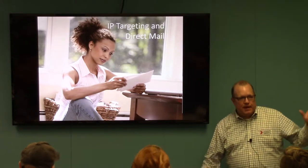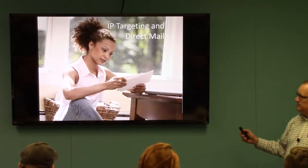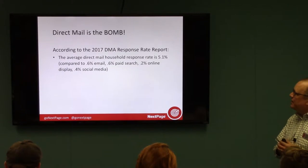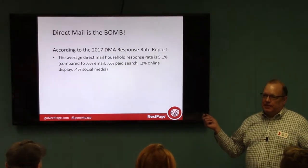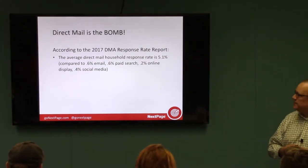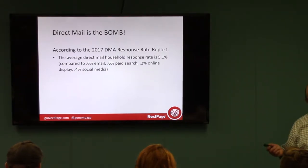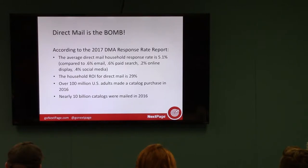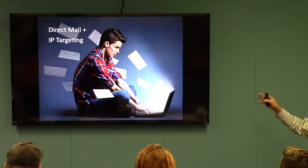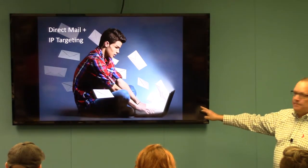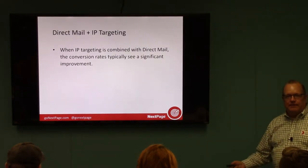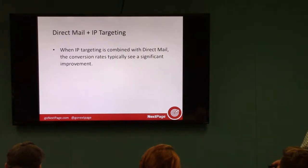Now, IP targeting combined with direct mail. How many of you do direct mail? Good — you're going to love this. According to the 2017 Data Marketing Association response rate report, direct mail is still king versus digital: 5.1% response rate versus 0.6% for email, 0.6% for paid search, 0.2% for display, and 0.4% for social media. The household ROI for direct mail is about 29%. Over 100 million U.S. adults made a catalog purchase in 2016, and over 10 billion catalogs were mailed that year. Direct mail is not going anywhere, and with the integration of IP targeting, it's just going to get better.